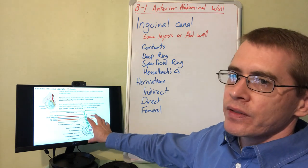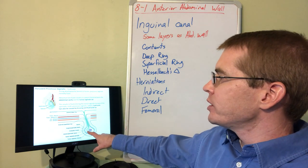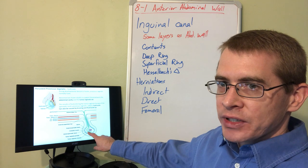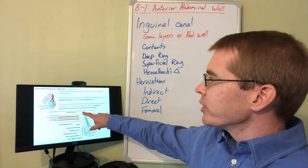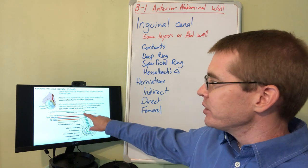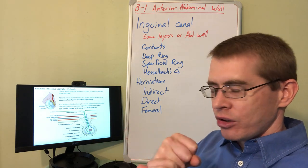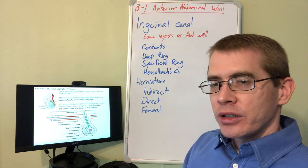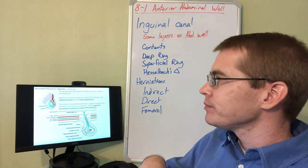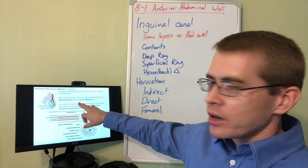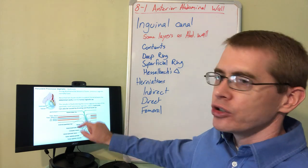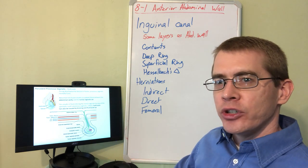Another interesting consequence of testicular descent in the male is the formation of the tunica vaginalis cavity — a potential space in which fluid can build up. During development, the processus vaginalis is usually closed off and obliterated, but in some cases that doesn't happen, leaving a patent process from the peritoneum down into the tunica vaginalis. When that occurs, fluid can move from the peritoneal cavity through the spermatic cord into the tunica vaginalis, causing a buildup of fluid called a hydrocele.